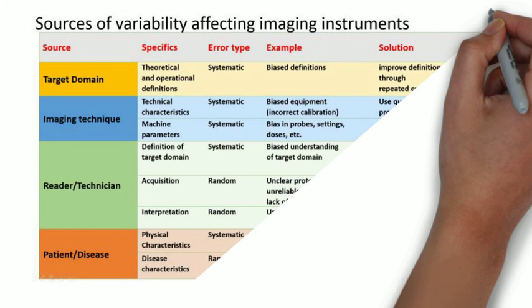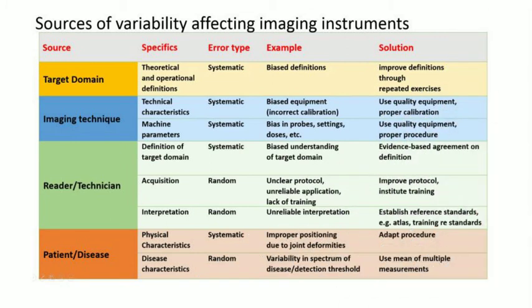And this is the table in your handout: thinking through sources of variability for an imaging outcome instrument, some examples and some solutions for managing the variability. In Indira's situation, some of these might make sense to her about the BMD machine, particularly about calibrating machines and making sure that only one machine is used in a study.